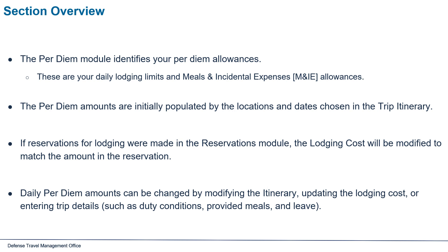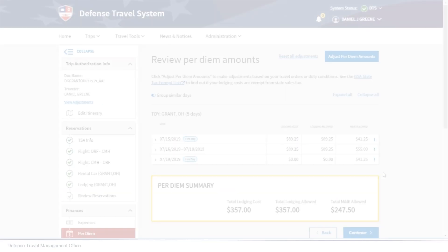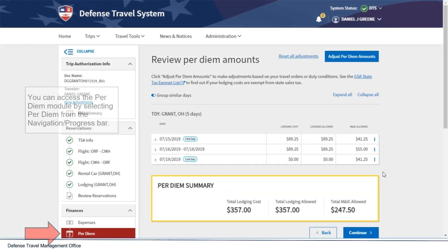Daily per diem amounts can be changed by modifying the itinerary, updating the lodging cost, or entering trip details such as duty conditions, provided meals, and leave. You can access the per diem module by selecting Per Diem from the navigation or progress bar.